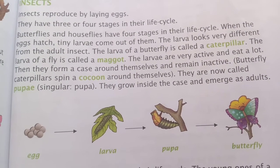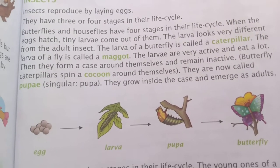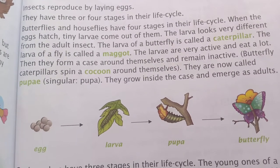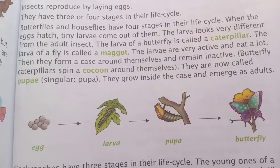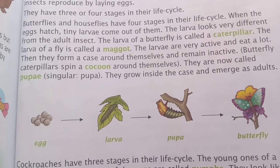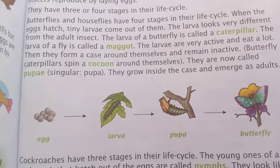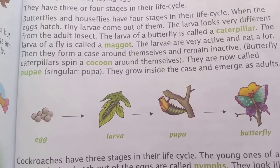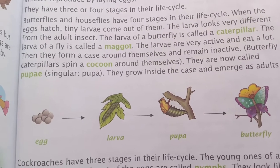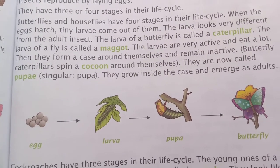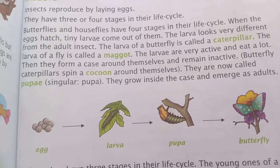When the eggs hatch, the larvae come out. Larvae look very different from the adult insect. The larva of a butterfly is called a caterpillar — this green one. The larva of a fly is called a maggot.